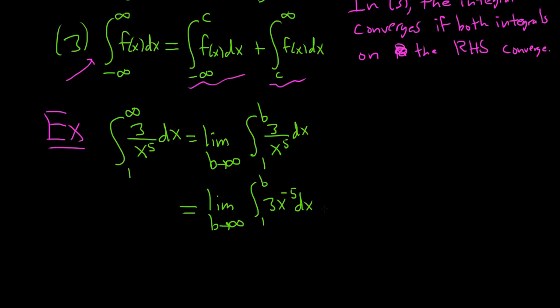At this point, we're ready to integrate. So we have the limit as b approaches infinity. And we're going to add 1 here to the exponent. So this is going to be 3x to the negative 4 over negative 4. And we're going from 1 to b. So again, just adding 1 and dividing, and that puts us here.